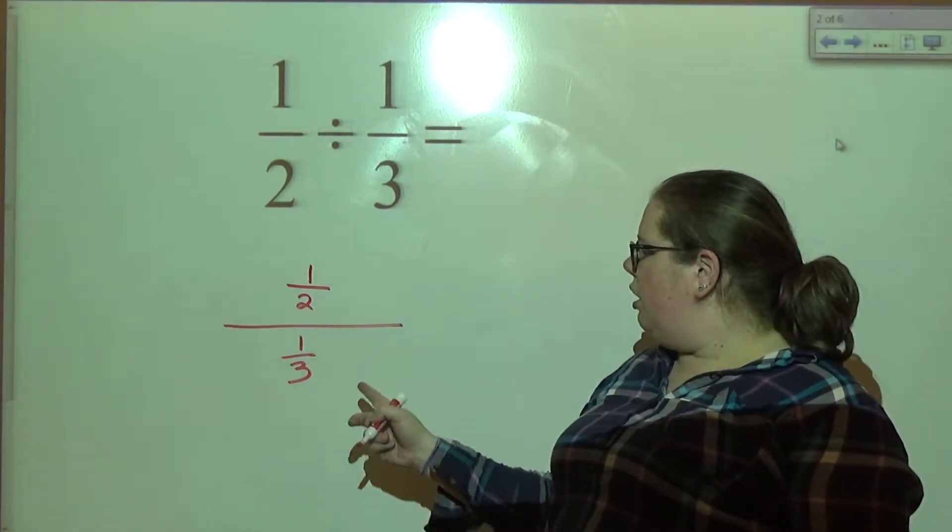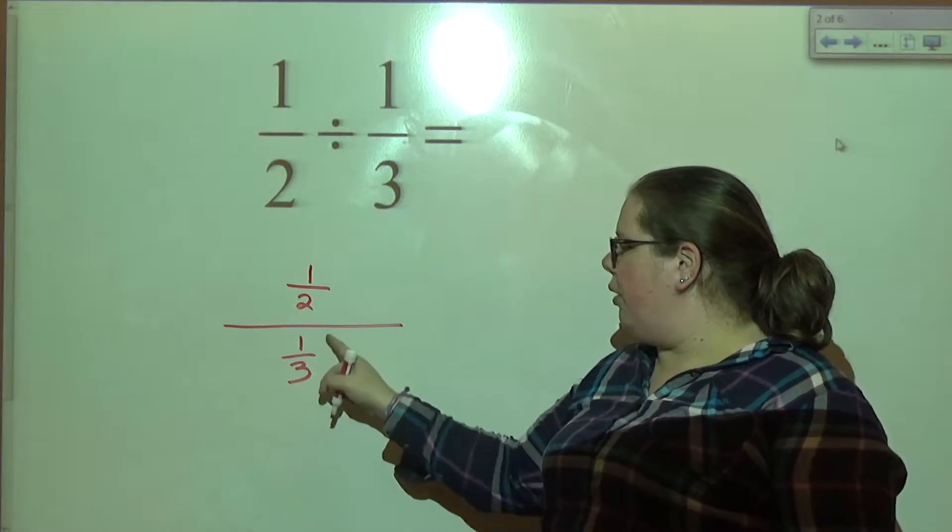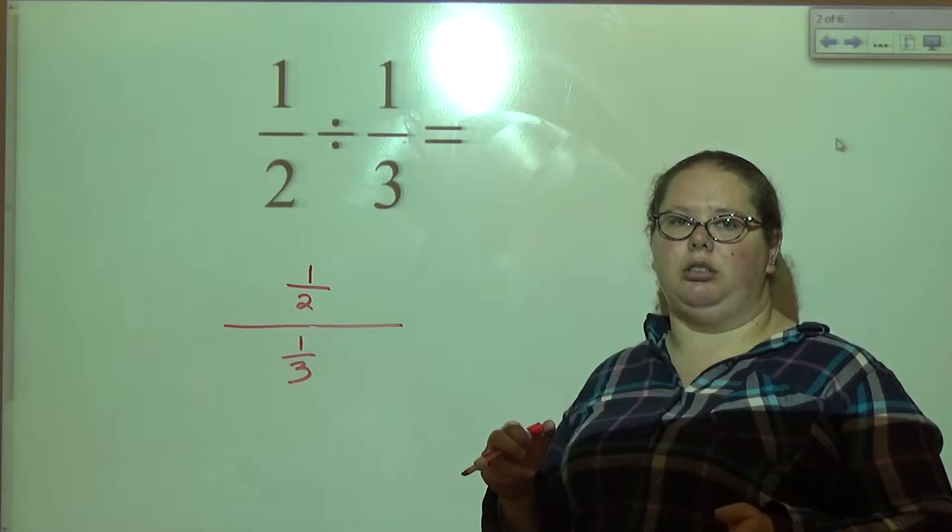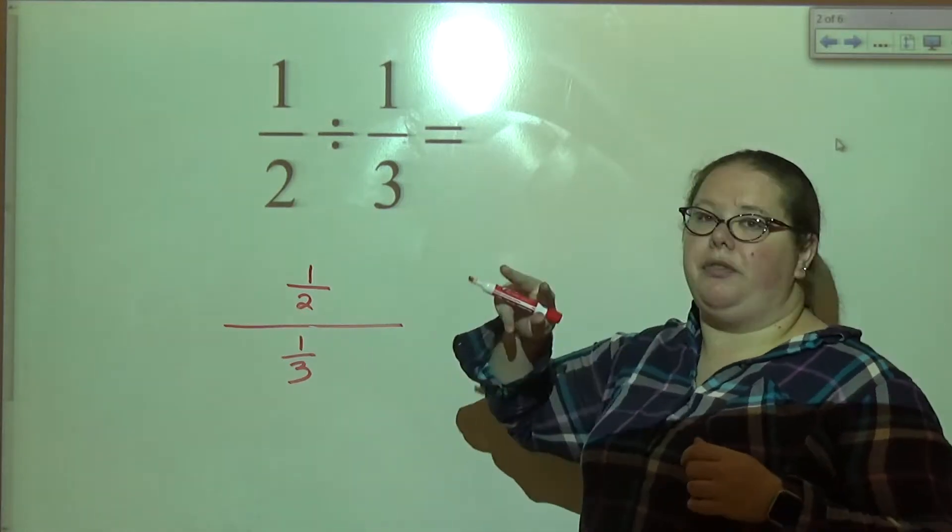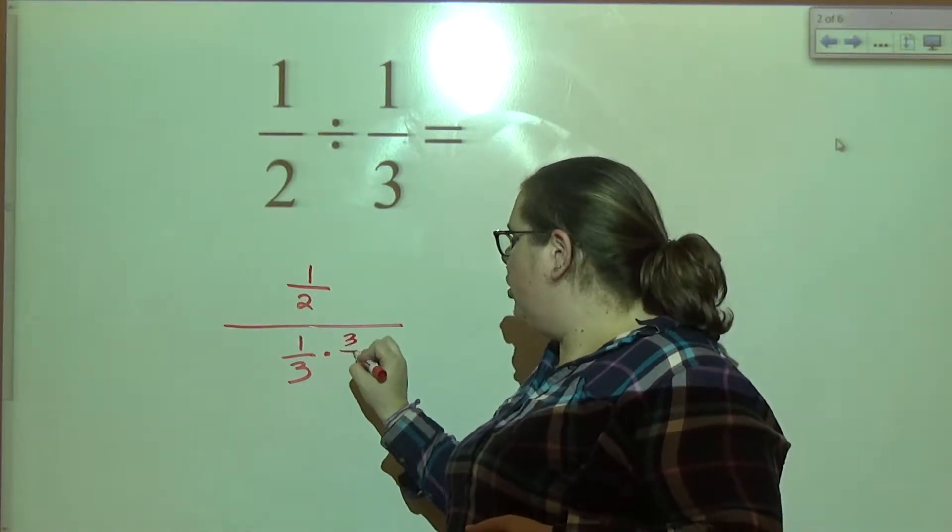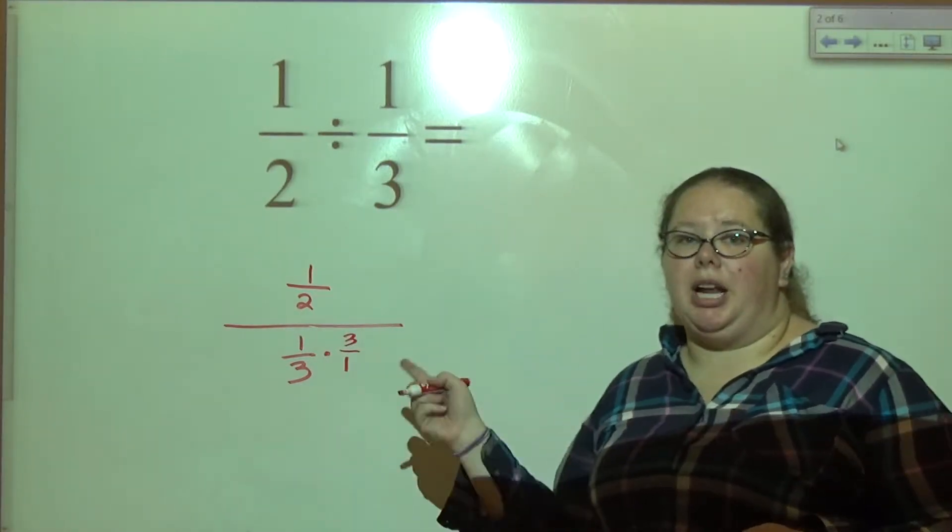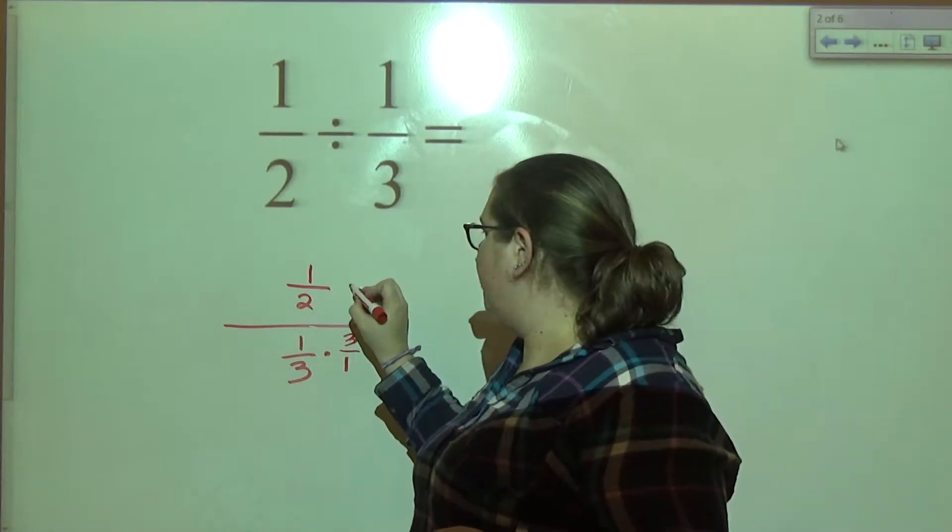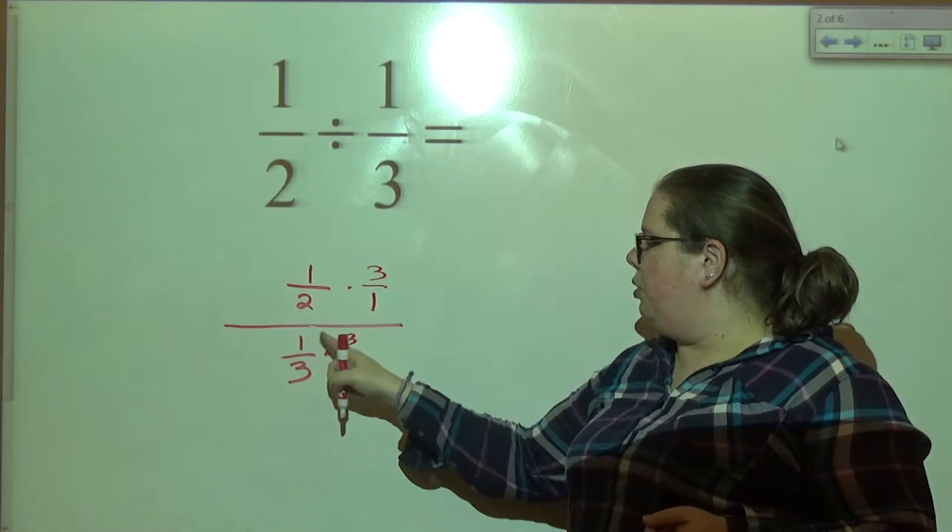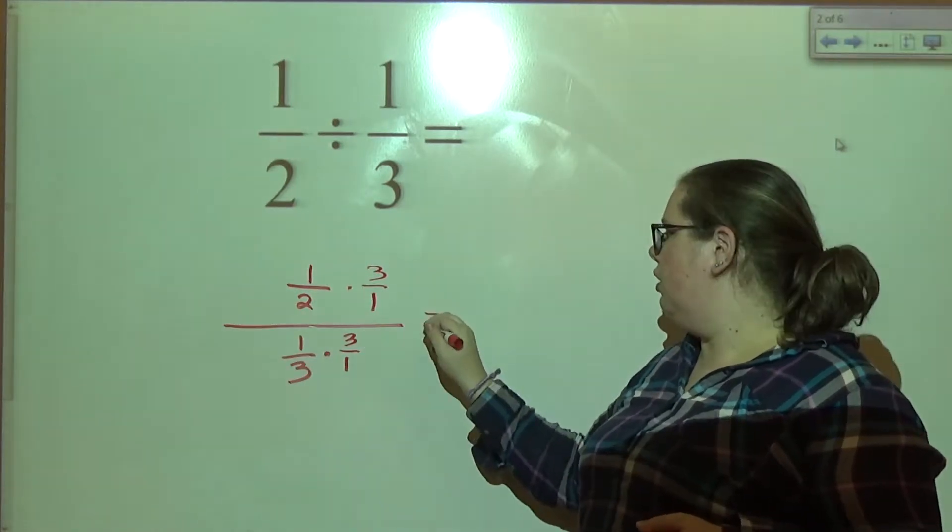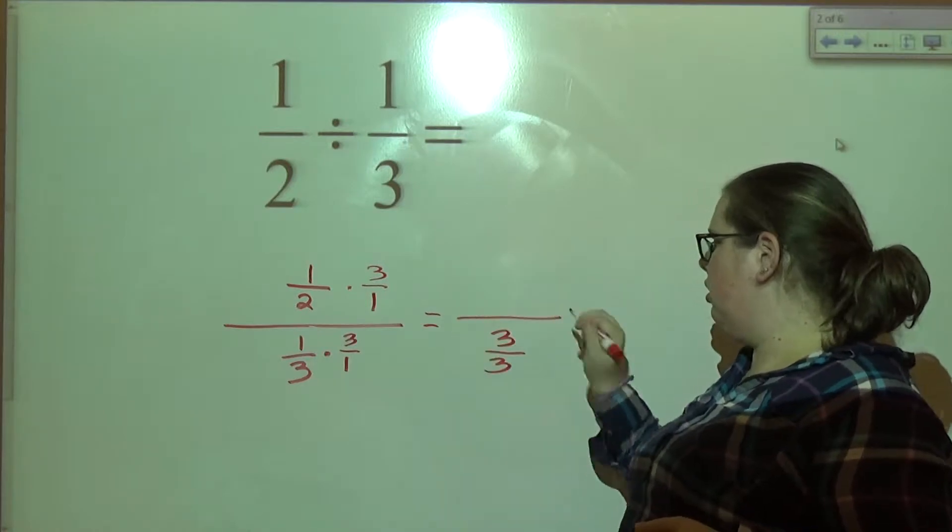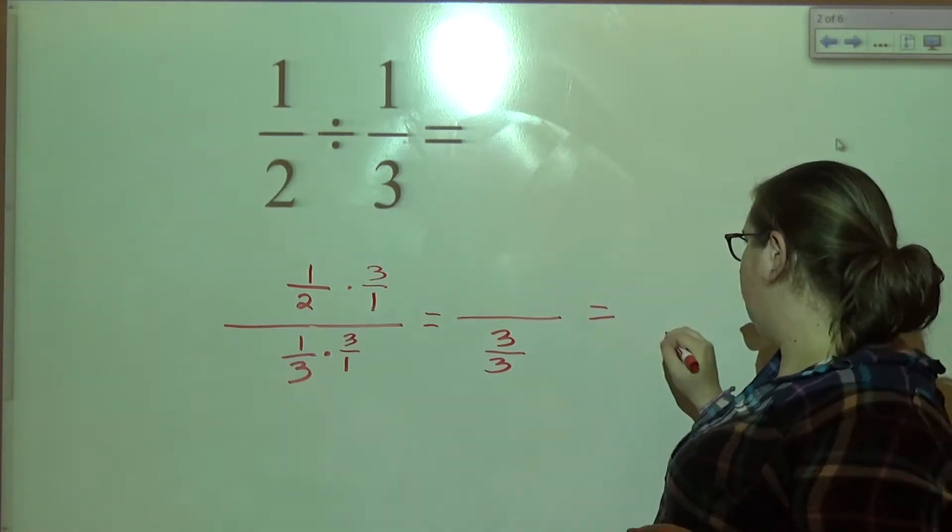So, one thing to get rid of that one third in the denominator, a common practice is to multiply by the reciprocal. The reciprocal is when you flip your fraction. So if I multiply this by three over one, whatever you do on the bottom of the fraction, you have to do on the top. So I'm going to do it up here too. So now what happens? What's one times three? That's three over three. What's three over three? One.